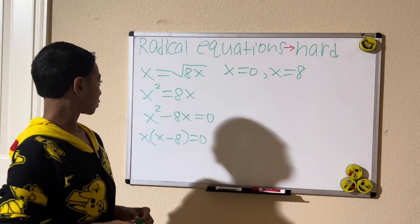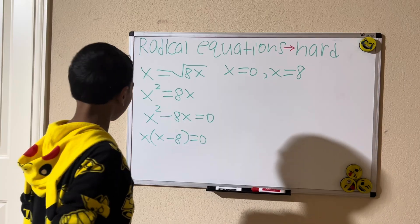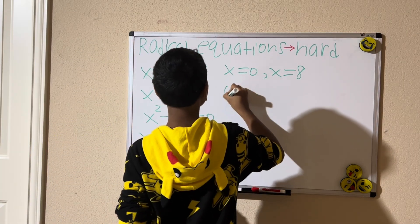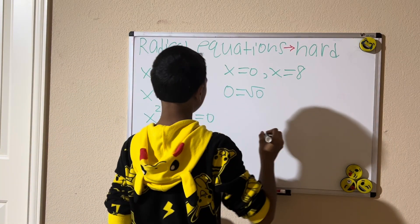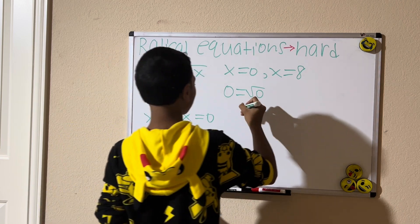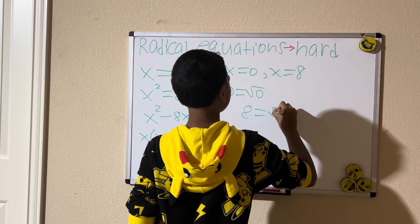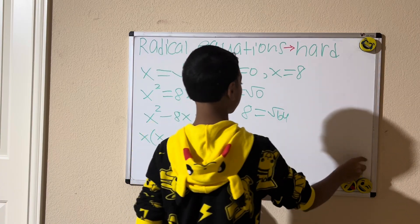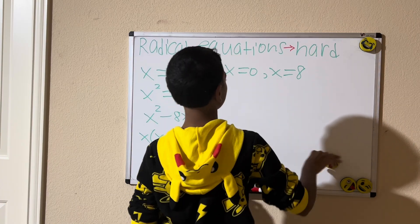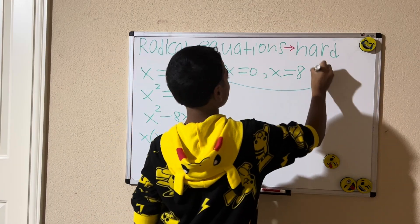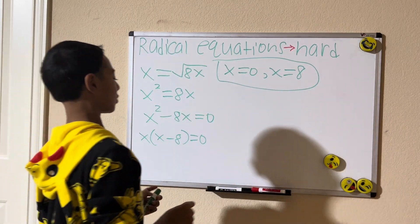Setting each factor equal to zero, we get x equals zero and x equals 8 — two solutions! Let's plug them in: zero equals the square root of zero, yes; and does 8 equal the square root of 64? Yes it does. So our two solutions are x equals zero and x equals eight.